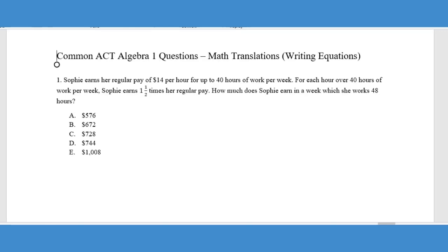All right, let's take a look at this first problem. It says here, Sophie earns her regular pay of $14 per hour for up to 40 hours a week. That's probably going to be pretty important information. For each hour over 40 hours a week, she earns one and a half times her regular pay. So one and a half times her regular pay, let's just go ahead and make that quick calculation because that's probably going to be useful.